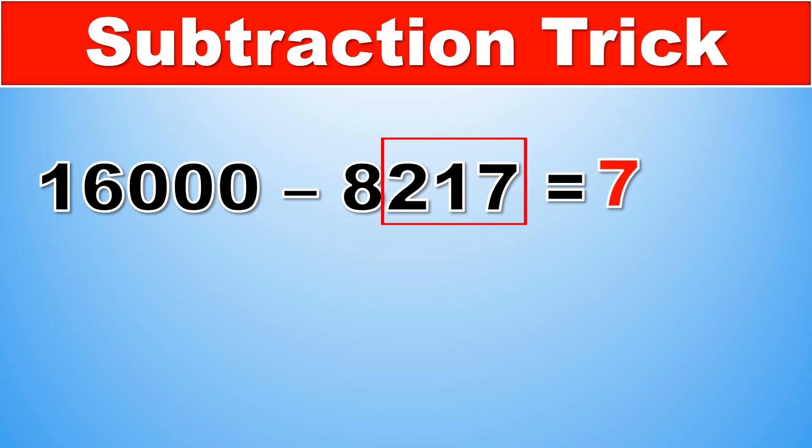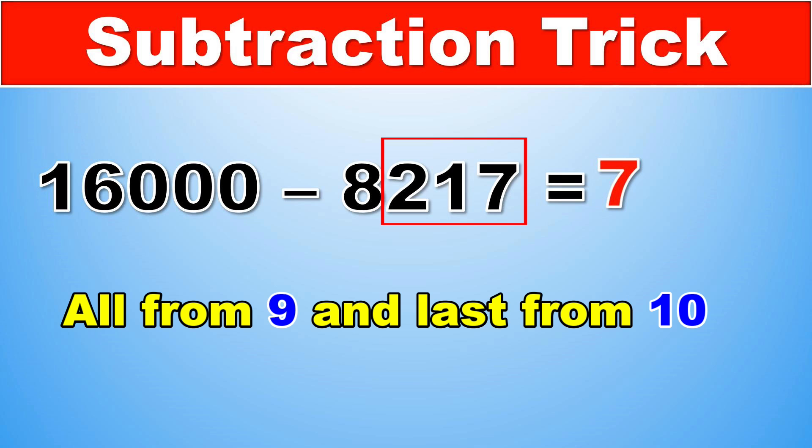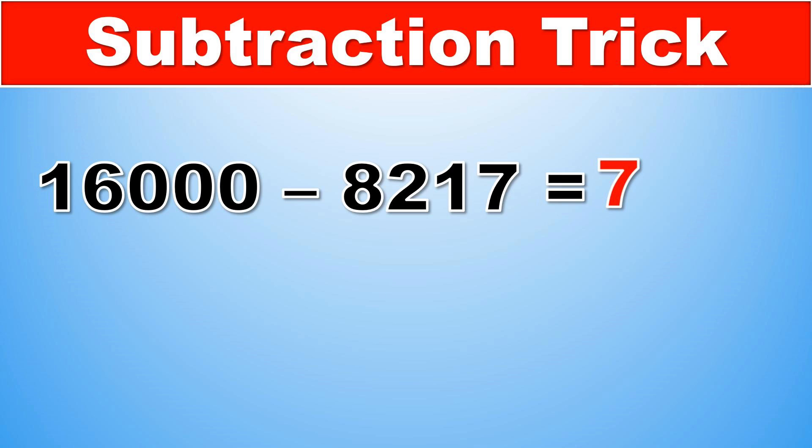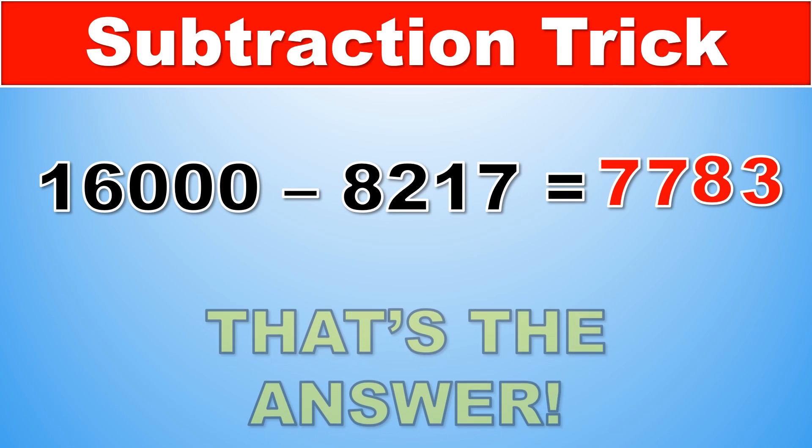The second part of the answer is formed with the same trick: all from 9 last from 10. In this case, what this means is we have to subtract each digit of the number 217 from 9, excepting the last one, which should be subtracted from 10. So this means we have 9 minus 2, which is 7, 9 minus 1, which is 8, and then, because 7 is the last digit, we have 10 minus 7, which is 3. Therefore, 16,000 minus 8,217 is equal to 7,783. And that is the answer.